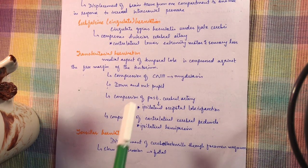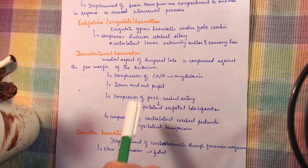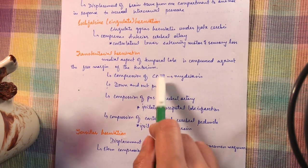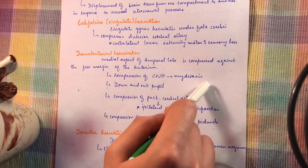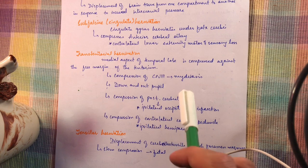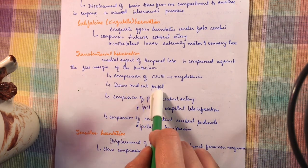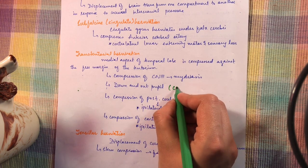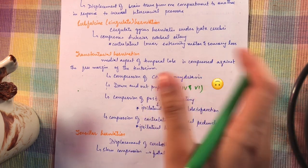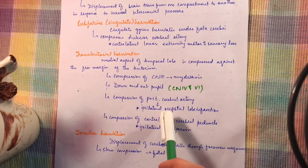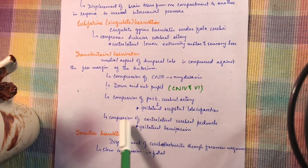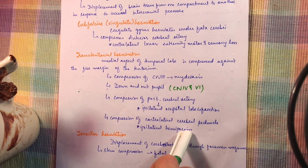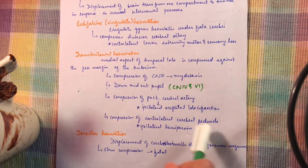Next is transtentorial herniation, where the medial aspect of the temporal lobe is compressed against the free margin of the tentorium. This causes compression of cranial nerve 3, leading to mydriasis due to unopposed sympathetic tone. It also causes a 'down and out' pupil due to unopposed action of cranial nerves 4 and 6. Additionally, it causes compression of the posterior cerebral artery leading to ipsilateral occipital lobe infarction, and compression of the contralateral cerebral peduncle leading to ipsilateral hemiparesis.